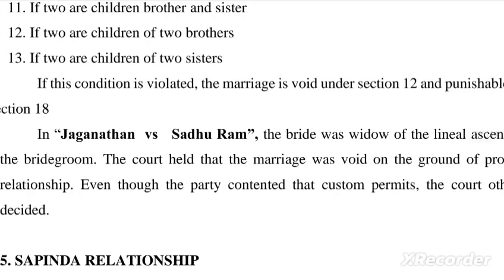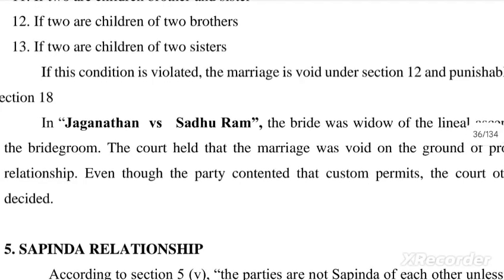If this condition is violated, the marriage is void under section 12 and punishable under section 18. In Jagannathan v. Saduram, the bride was the widow of a linear ascendant of the bridegroom. The court held that the marriage was void on the ground of prohibited relationship, even though the party contended that custom permits — the court decided otherwise.